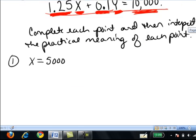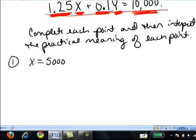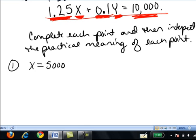The first question: we're given that x equals 5,000. We want to complete this point. We know an x value. That means we need to find the y value, and then we'll interpret the practical meaning of that point in the context of this problem. First of all, we were told that x stands for the number of ducks that they make. So since x is 5,000, this stands for 5,000 ducks produced.